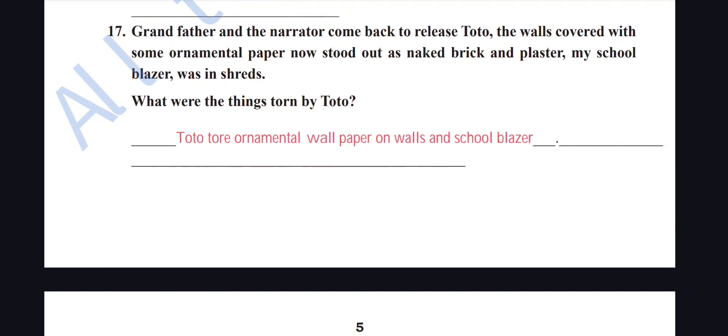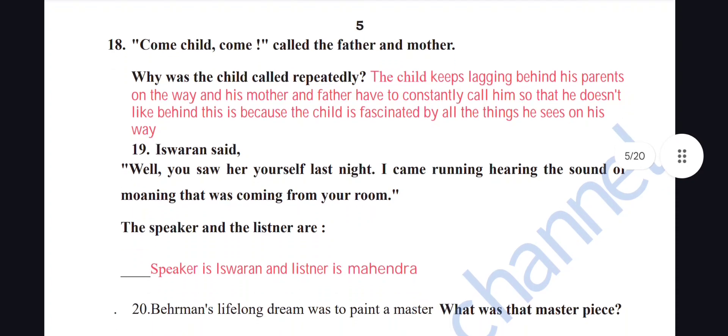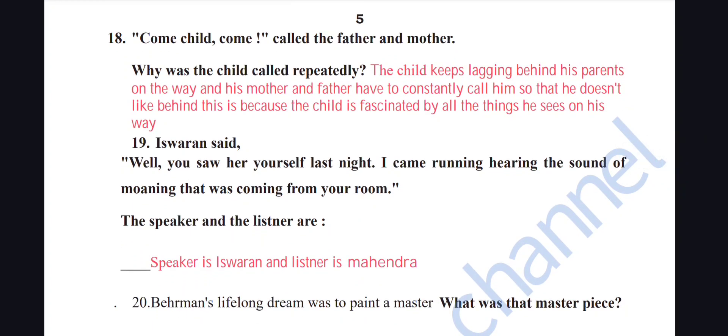What things did Toto tear? Toto tore the ornamental wall paper on the walls and the school blazer. Why was the child called repeatedly? The child keeps lagging behind his parents on the way; the mother and father have to constantly call him because the child is fascinated by everything he sees on the way.